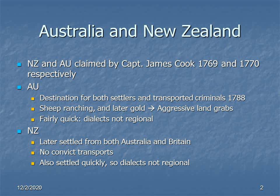To recap the history of settlement, which of course is very important for the spread or development of dialects, the English settlement of Australia and New Zealand goes back to the late 18th century, with New Zealand having been discovered and claimed by Captain James Cook in 1769, and Australia the following year by the same person.